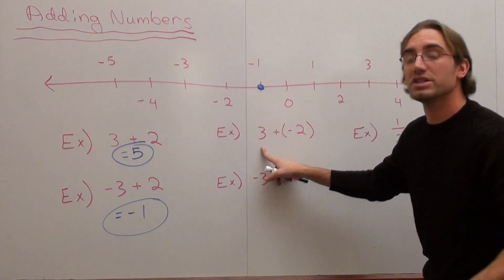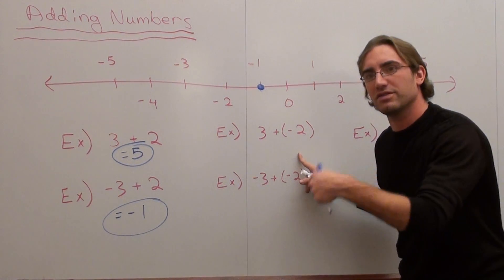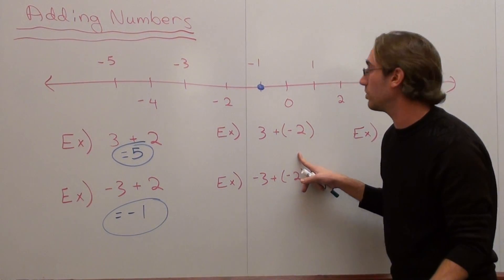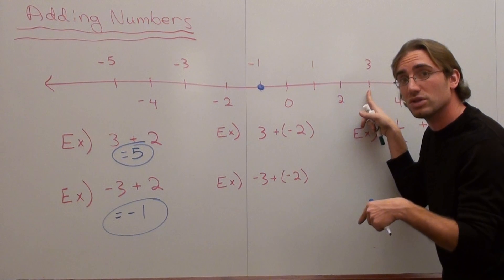You start at 3 degrees and you're going to add negative 2. If you're adding negative 2, you're going to get colder than what you started with. So 3 is over here, and if you add negative 2, remember negatives go to the left: 1, 2, your answer is 1.